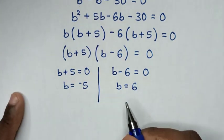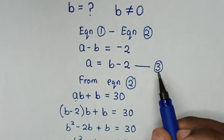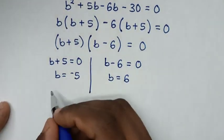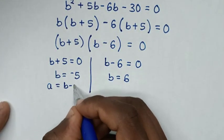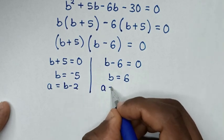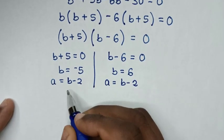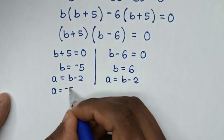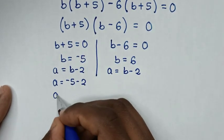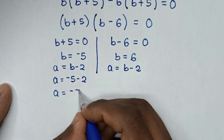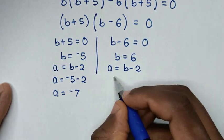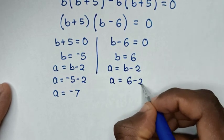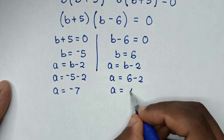To find the value of A, from the third equation A is equal to B minus 2. Substituting B equals negative 5 gives A equals negative 5 minus 2, so A equals negative 7. Substituting B equals 6 gives A equals 6 minus 2, so A equals 4.